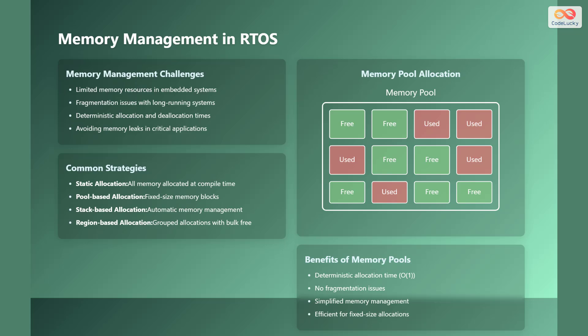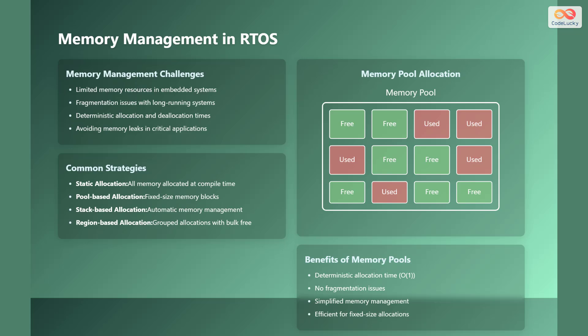Now let's discuss memory management within RTOS. Memory management presents unique challenges, including limited memory resources in embedded systems, fragmentation issues with long-running systems, deterministic allocation and deallocation times, and the constant need to avoid memory leaks in critical applications. Common strategies include static allocation, where all memory is allocated at compile time; pool-based allocation, which uses fixed-size memory blocks; stack-based allocation for automatic memory management; and region-based allocation for grouped allocations with bulk-free. Memory pool allocation is very common — its benefits include deterministic constant allocation time, no fragmentation issues, simplified memory management, and efficiency for fixed-size allocations.